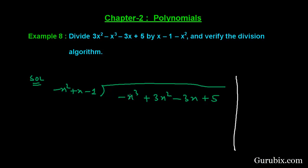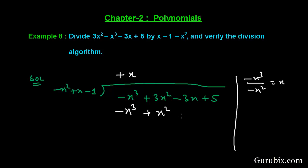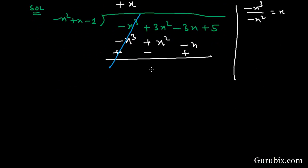To find the first term of the quotient, we shall divide the first term of the dividend by the first term of the divisor. Minus x cubed divided by minus x squared gives us x, so the first term in the quotient is plus x. Now we multiply all terms of the divisor by x, giving minus x cubed, plus x squared, and minus x. Then we change the sign and cancel out these terms.